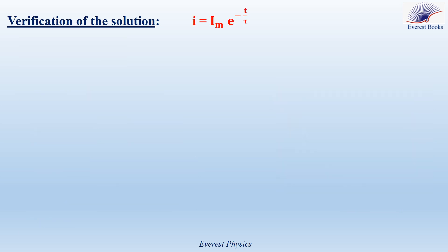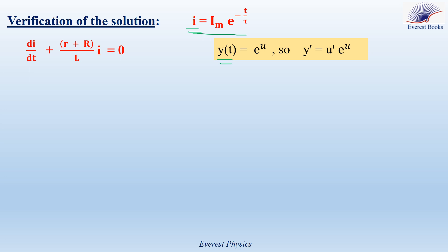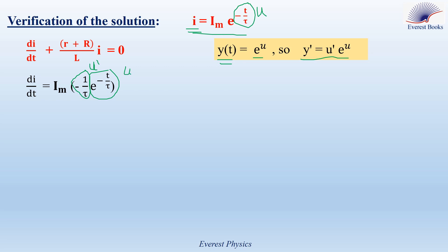Verification of the solution: we need to differentiate i with respect to time and substitute into the differential equation. Recall that if y = e^u, then dy/dt = u′·e^u. Taking u = −t/τ, we differentiate the current with respect to time: di/dt = Im · (−1/τ) · e^(−t/τ), where −1/τ is u′ and e^(−t/τ) is e^u.